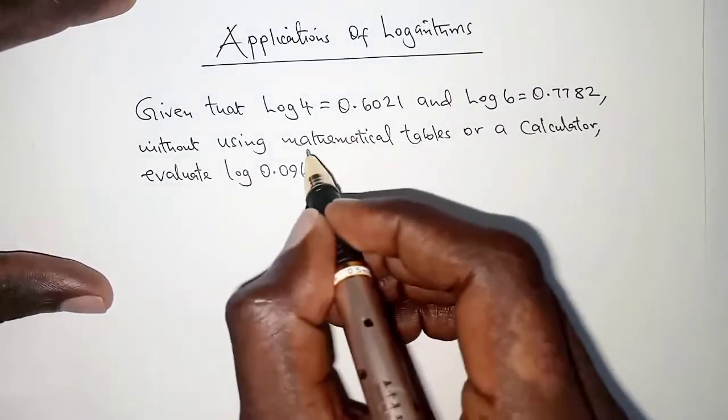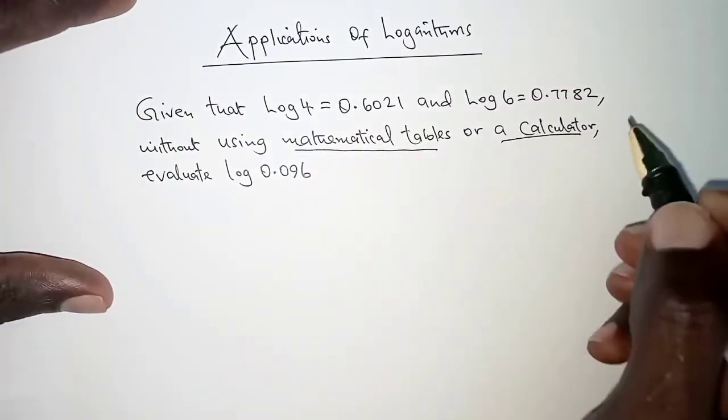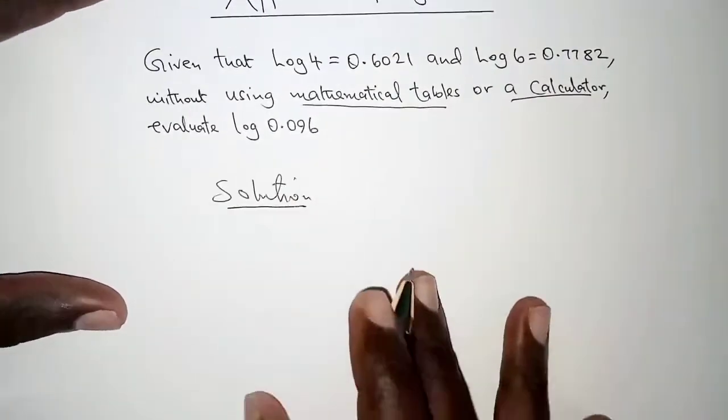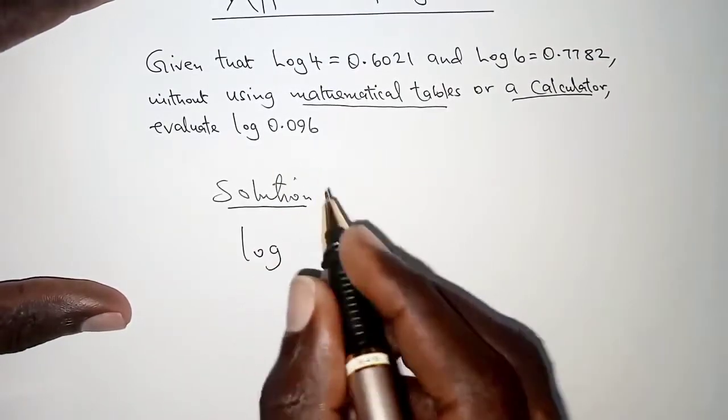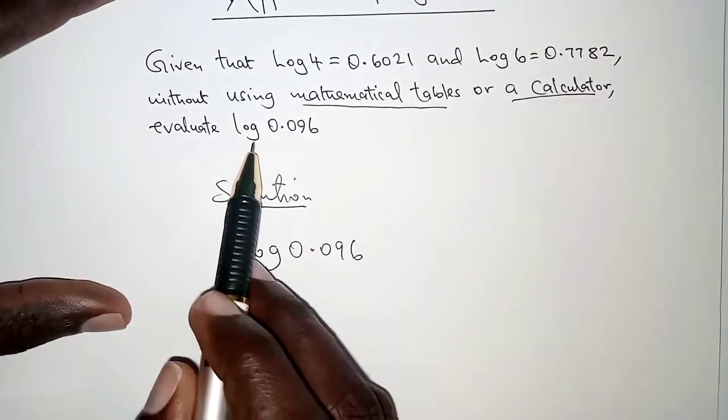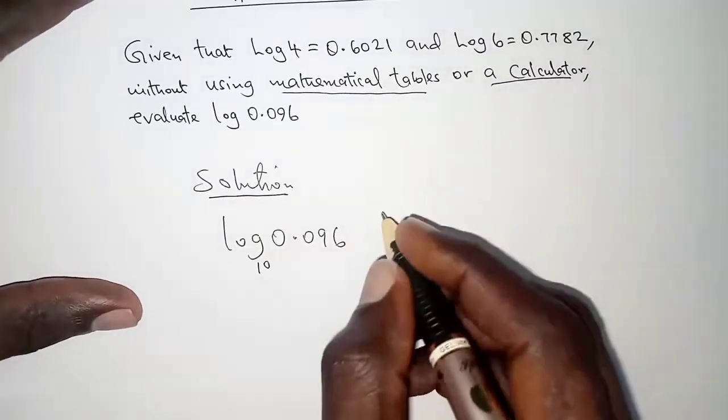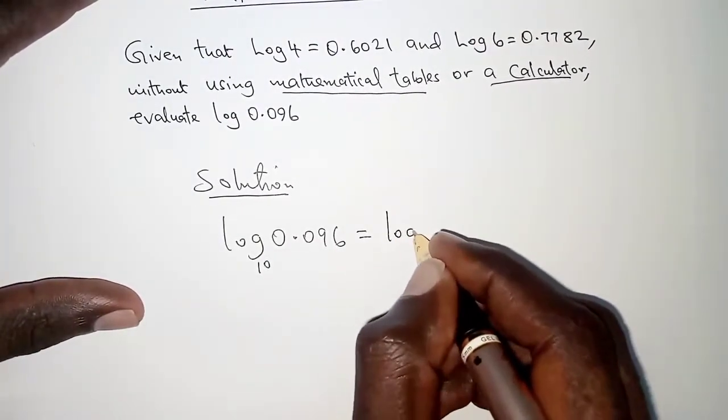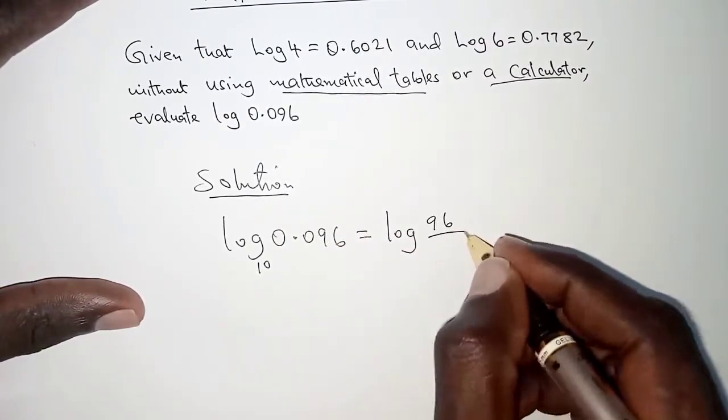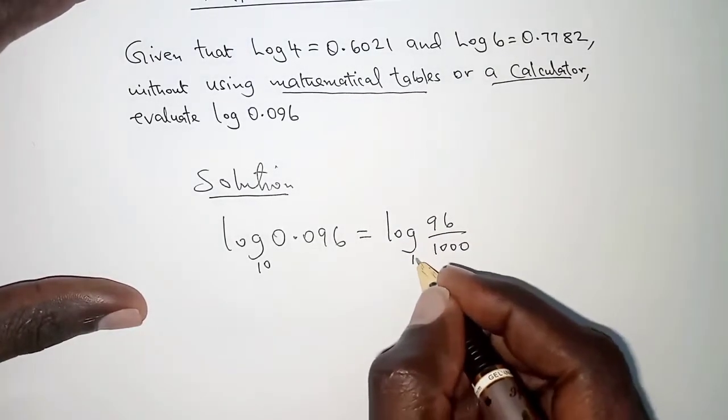Remember, we are not to use mathematical tables or a calculator. Let's construct log 0.096. This is common logarithm to base 10, so it can be written as log(96/1000) to base 10.